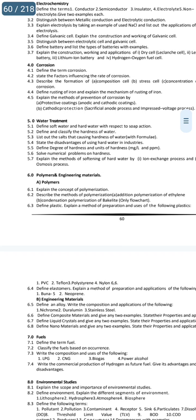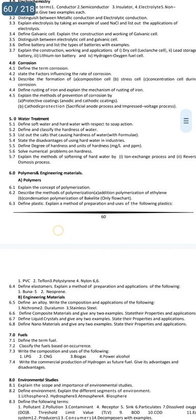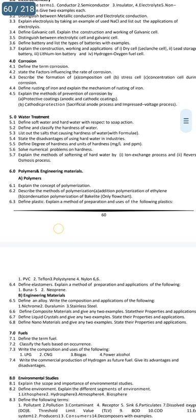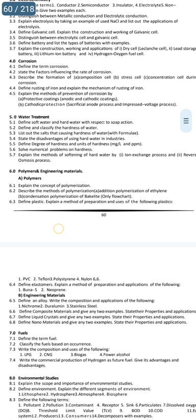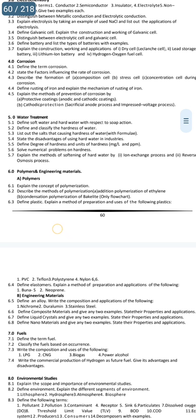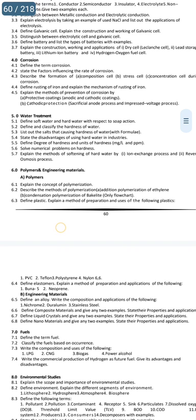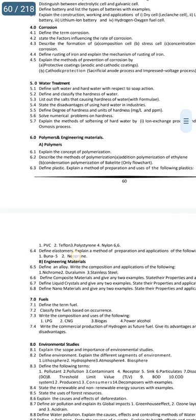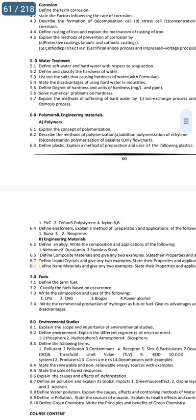Section 4.5 covers cathodic protection and the sacrificial anodic process — very important. The cathodic protection method, sacrificial anodic process, and impressed voltage method are very important. Rusting of iron mechanism and sacrificial anodic protection method give two gunshot questions.